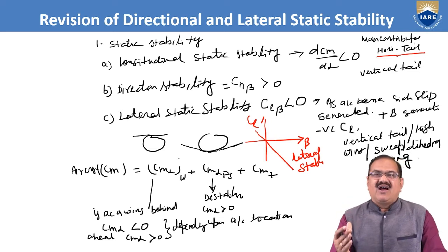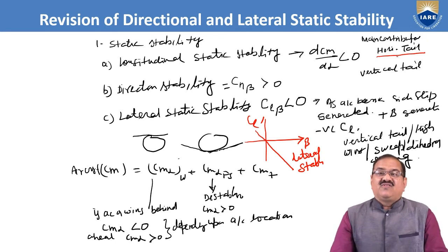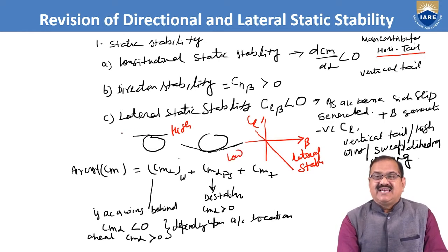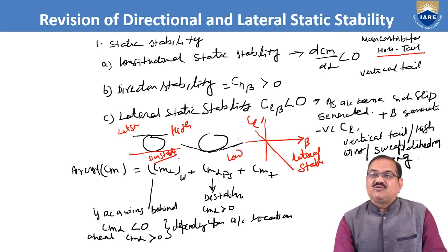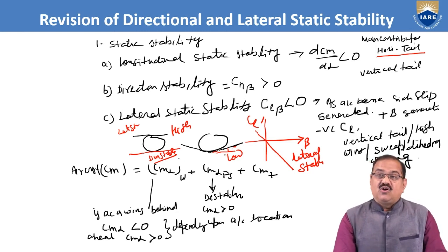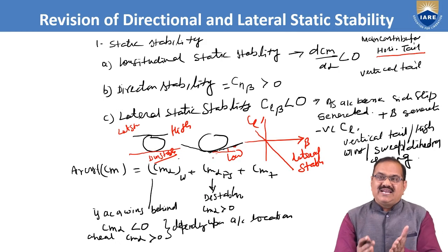For directional stability, the vertical tail is the primary component — it makes the aircraft directionally stable. For lateral stability, wing configuration matters. A high-wing configuration is laterally stable; a low-wing configuration is unstable. To make a low-wing aircraft laterally stable, we give it dihedral — the tips of the wings are raised above the horizontal plane.